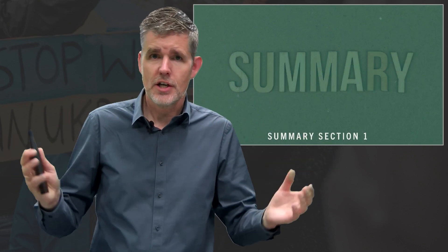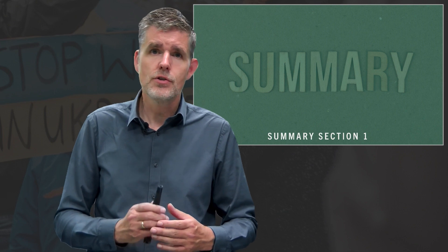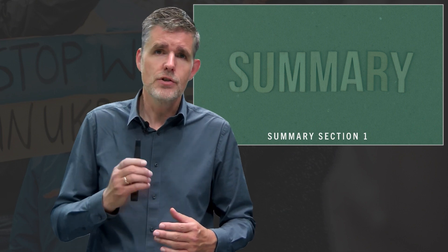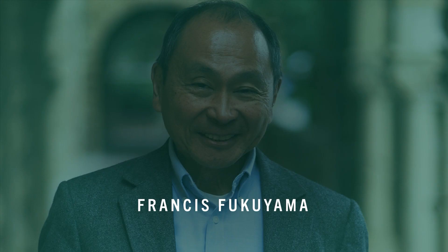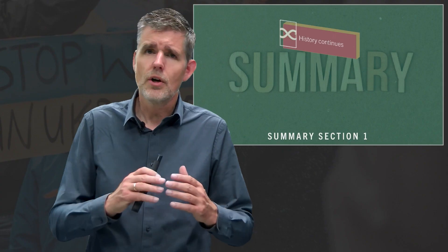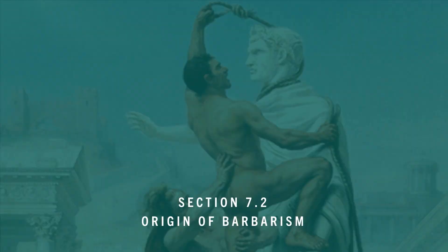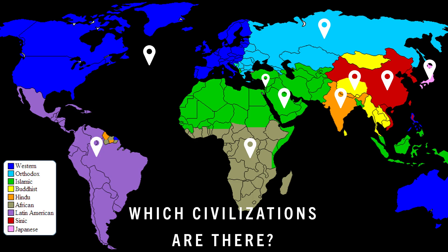Let's summarize section 1. Huntington's theory is a reaction to the end of history thesis by Francis Fukuyama. Huntington states that after the end of the Cold War, history continues to be a struggle between cultural groups. Secondly, the world is not about one struggle of civilization against barbarism, according to Huntington. It's a struggle between civilizations.